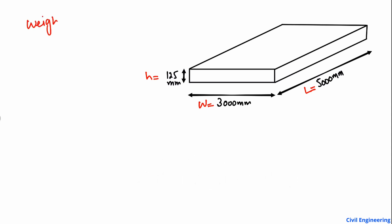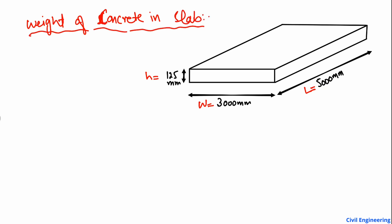So we are going to find out the weight of concrete in this slab. I will show you in very simple and easy steps. Step number one is to find out the volume of the slab. The volume is equal to the length multiplied by the width multiplied by the height.